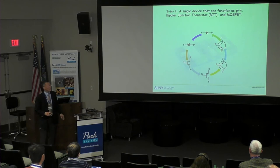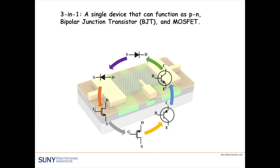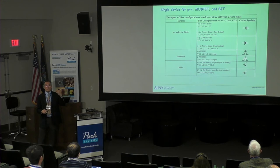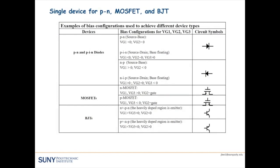I'm going to explain a semester's worth of device physics in about 20 minutes, all based on one device that can dynamically implement all these functions. In addition to the PN diode, MOSFET, and BJT, we can also change the polarity of each device — PN or NP, P-channel or N-channel MOSFET, and NPN or PNP bipolar junction transistors. This single device can do all of them.